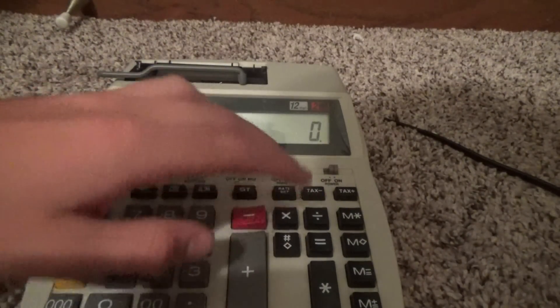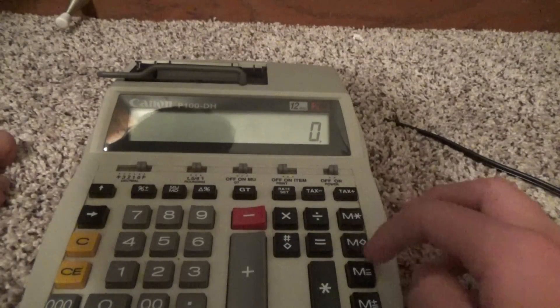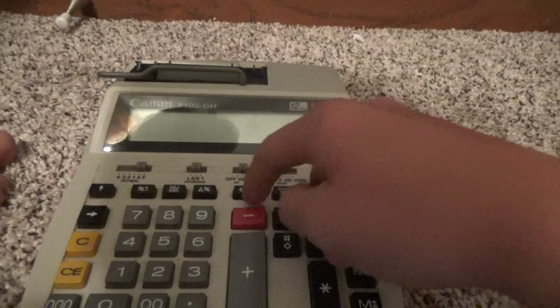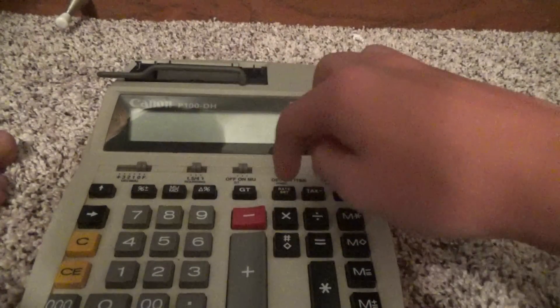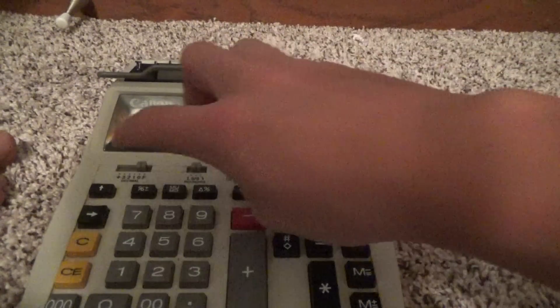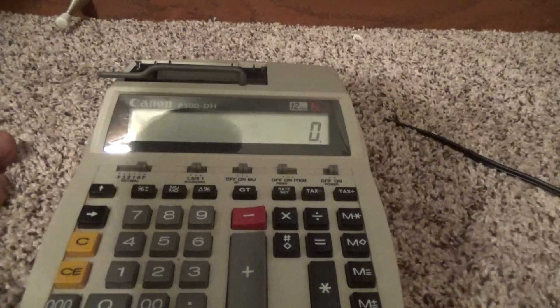So here we have our numbers, operations, memory, total, there's the grand total button if we choose to use it. Percentages, printer feed, paper feed button.